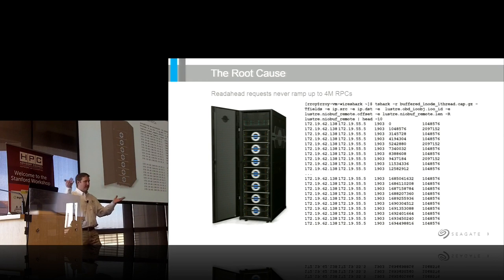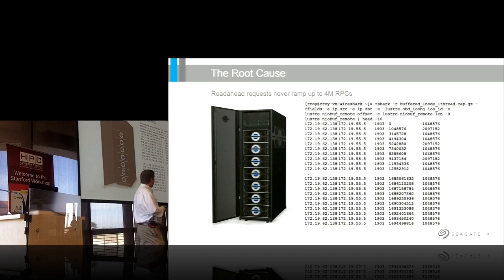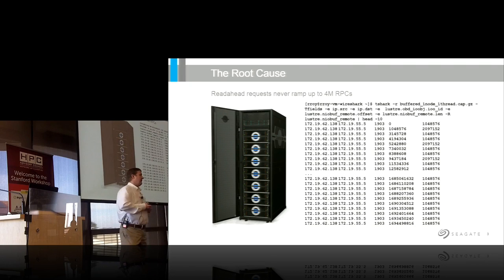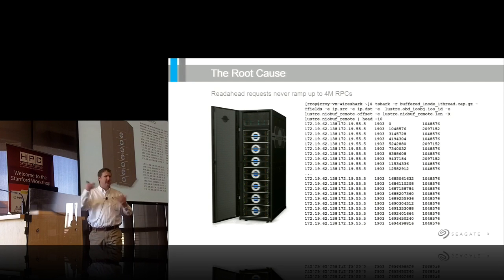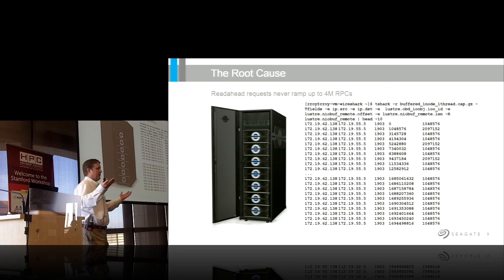Looking at source address, destination address, object ID, and offset in length: what I found was that when I did buffered reads, it never ramped up to the 4-meg RPCs that we typically see. When I do direct I/O reads, I get these big 4-meg RPCs. If I used 1-meg RPCs on our storage platform — or any storage platform I tested — the performance isn't as good as with 4-meg RPCs. Lustre read-ahead seems broken: it's supposed to initially fetch 1-meg of data then ramp up, but it was always just staying at 1-meg, never going much above 2.